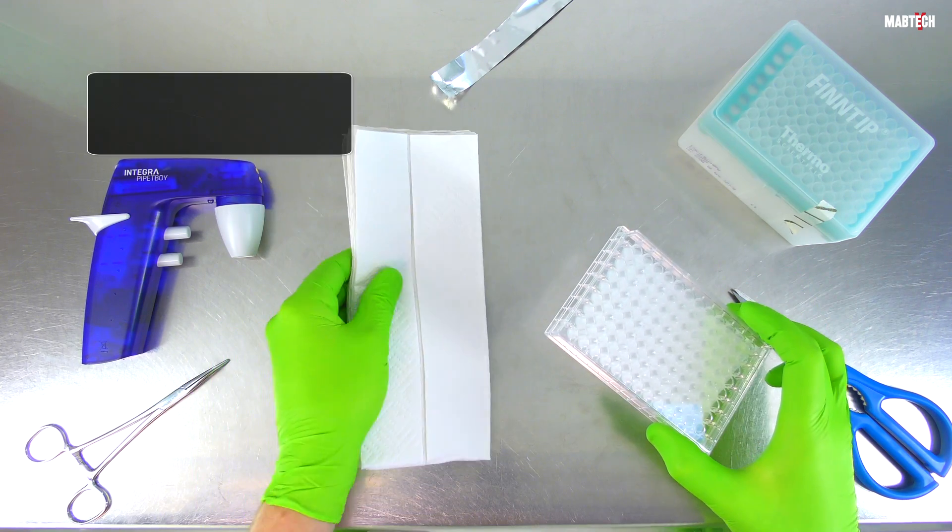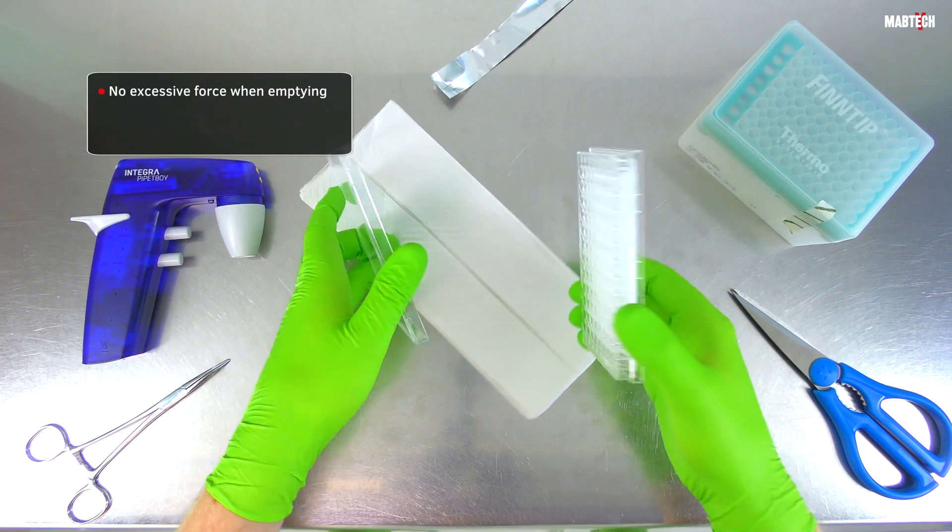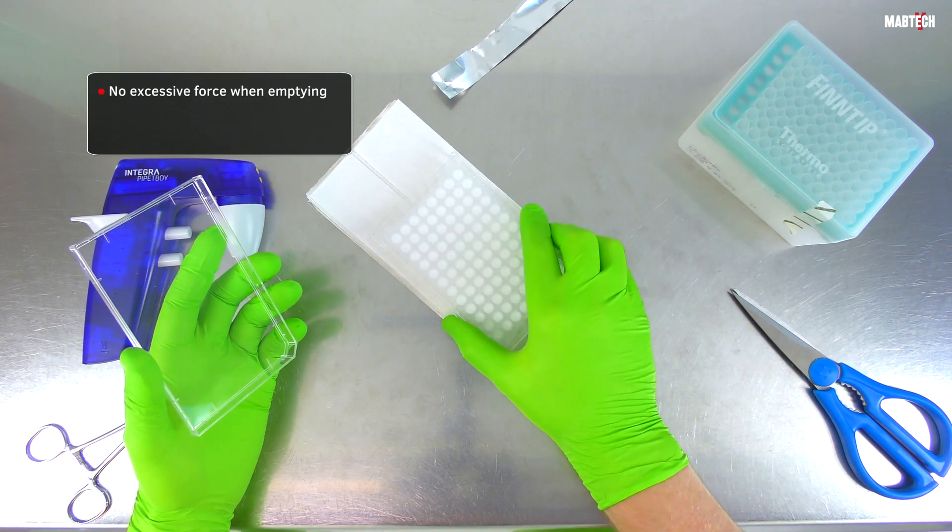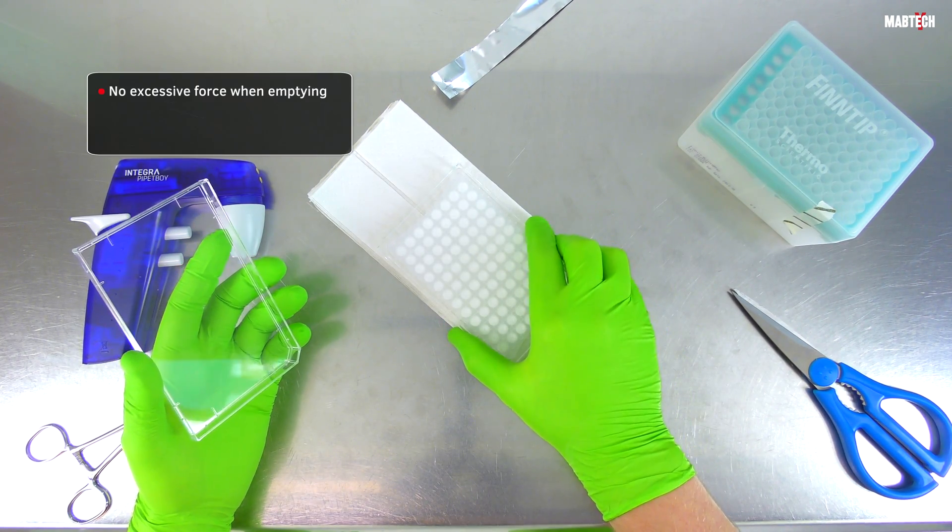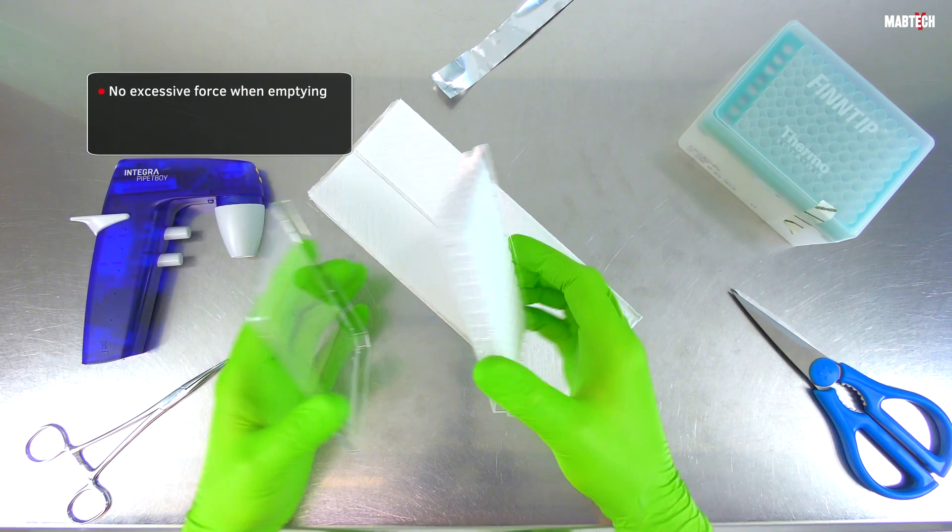Second, avoid using excessive force when emptying the plate. A firm tap is fine for removing small amounts of PBS or water, but you should never whip the plate ferociously into a hard surface with only thin sheets of paper covering it.